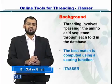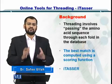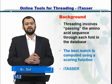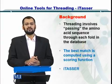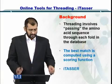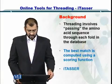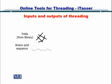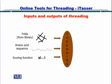I-TASSER is a tool that can be used to perform all of this work in a very easy and seamless manner. The inputs are the folds from libraries, the amino acid sequences, and the scoring function. These are input to the software, which outputs the predicted structure.